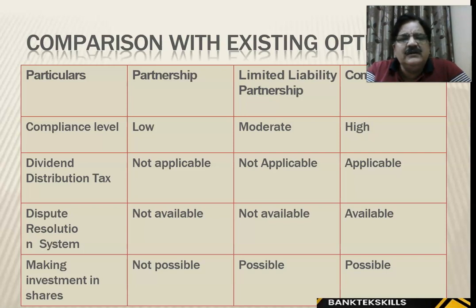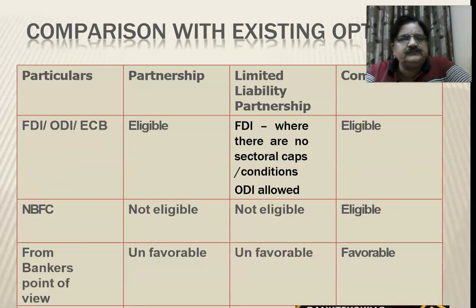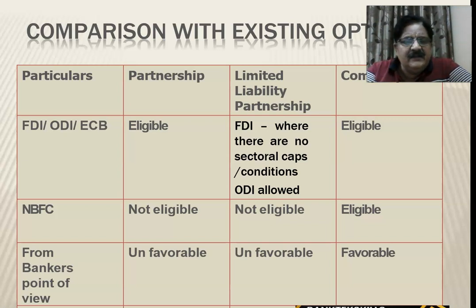The compliance level for partnership is low, for LLP it is moderate, and for companies it is very high — every quarter you need audited balance sheets and declared results. Dividend Distribution Tax (DDT) is not applicable in partnership and LLP, but is applicable for companies. Dispute resolution is only available in case of companies. LLPs can invest in shares and go into the equity market. For FDI, LLPs are eligible where there are no sectoral caps or conditions. NBFCs can be formed by companies but not by LLP or partnership. From a banker's point of view, partnership and LLP are unfavorable, while companies are favorable.